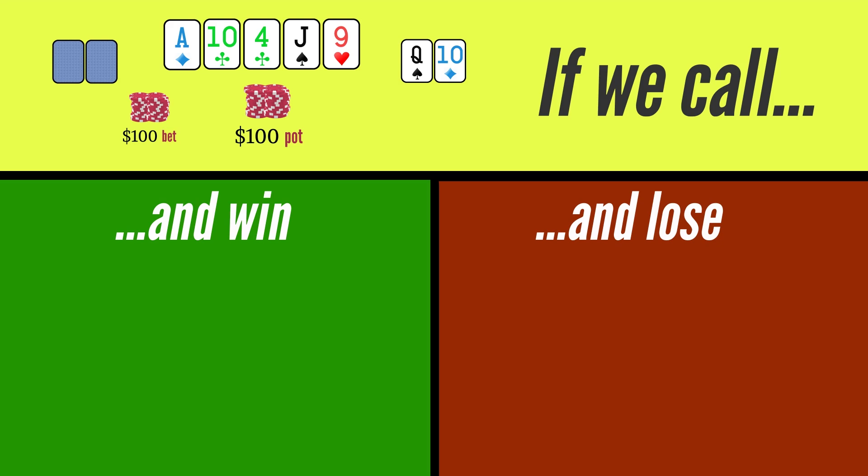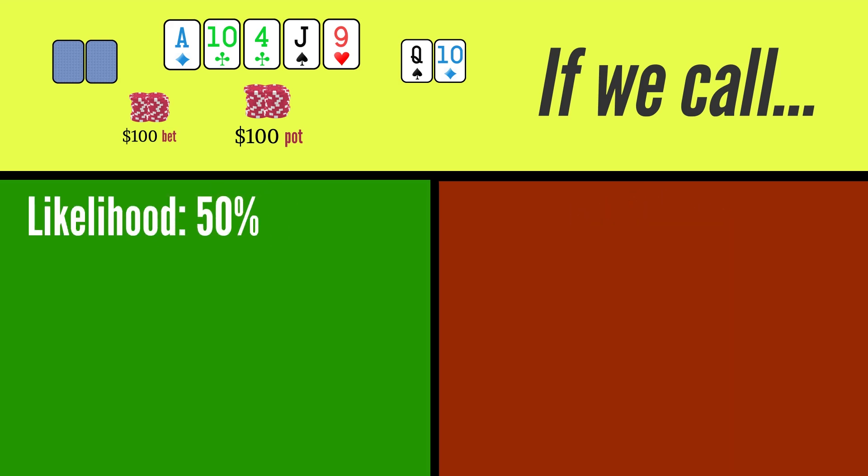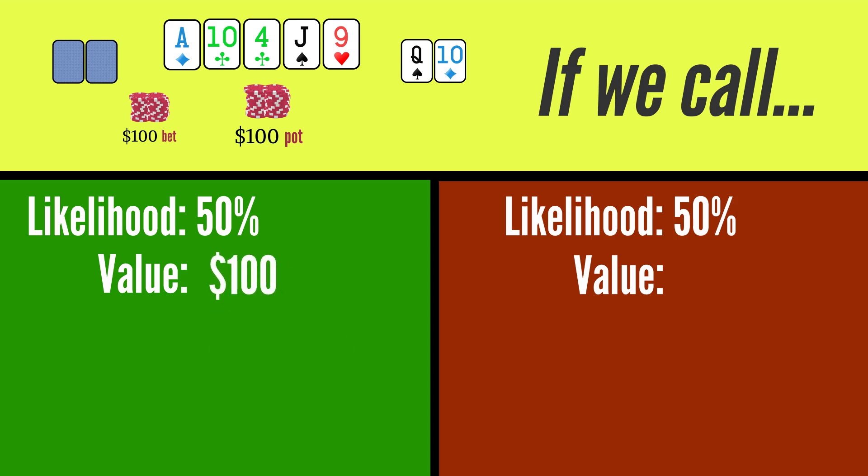Then we establish the probability of each outcome. We win 50% of the time and we lose 50% of the time. Next, we establish the value of each outcome. If we call and win, we get the hundred dollars in the pot plus the hundred dollar bet. If we call and our opponent wins, we have lost that hundred dollars.